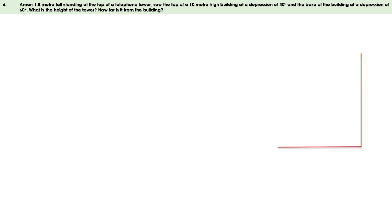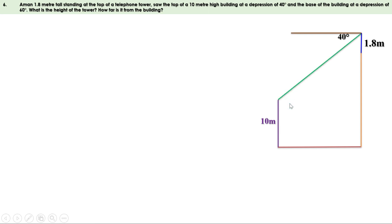Let us draw a figure. There is a telephone tower with a person standing on top — his height is 1.8 meters. There is a building whose height is 10 meters. The person sees the top of the building at a depression of 40 degrees — he looks straight first, then downwards; the angle between them is 40 degrees. From the same position he sees the base of the building at a depression of 60 degrees — he looks straight first, then downwards; the angle between them is 60 degrees.